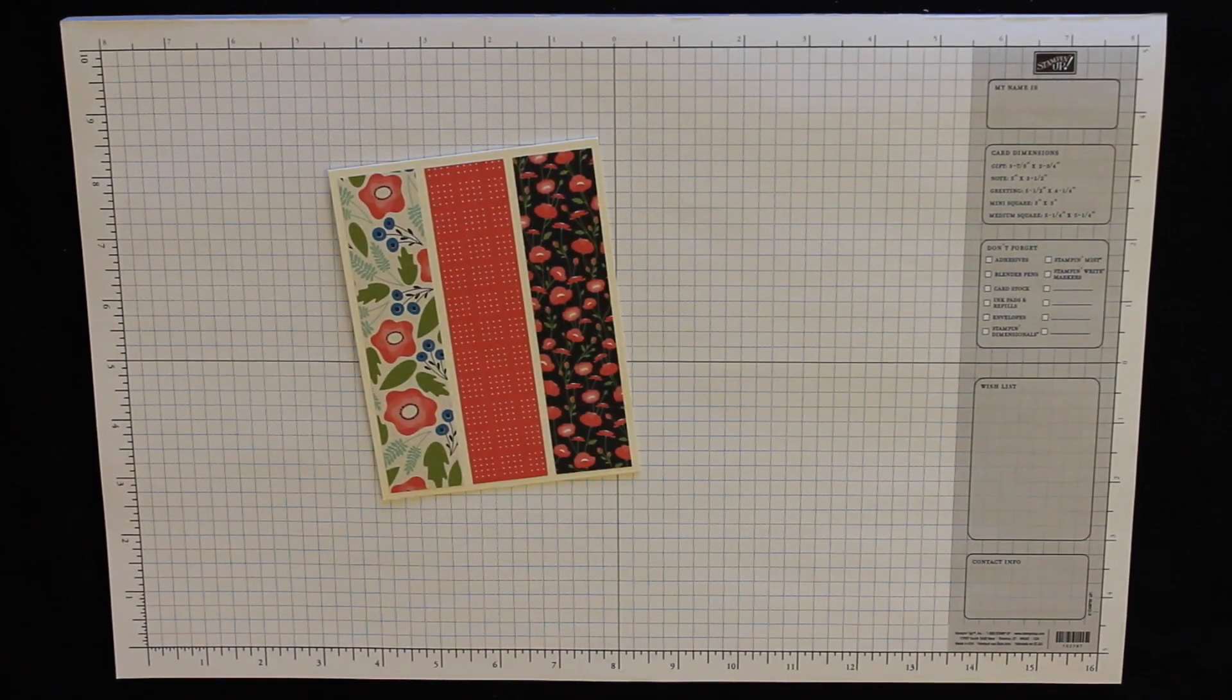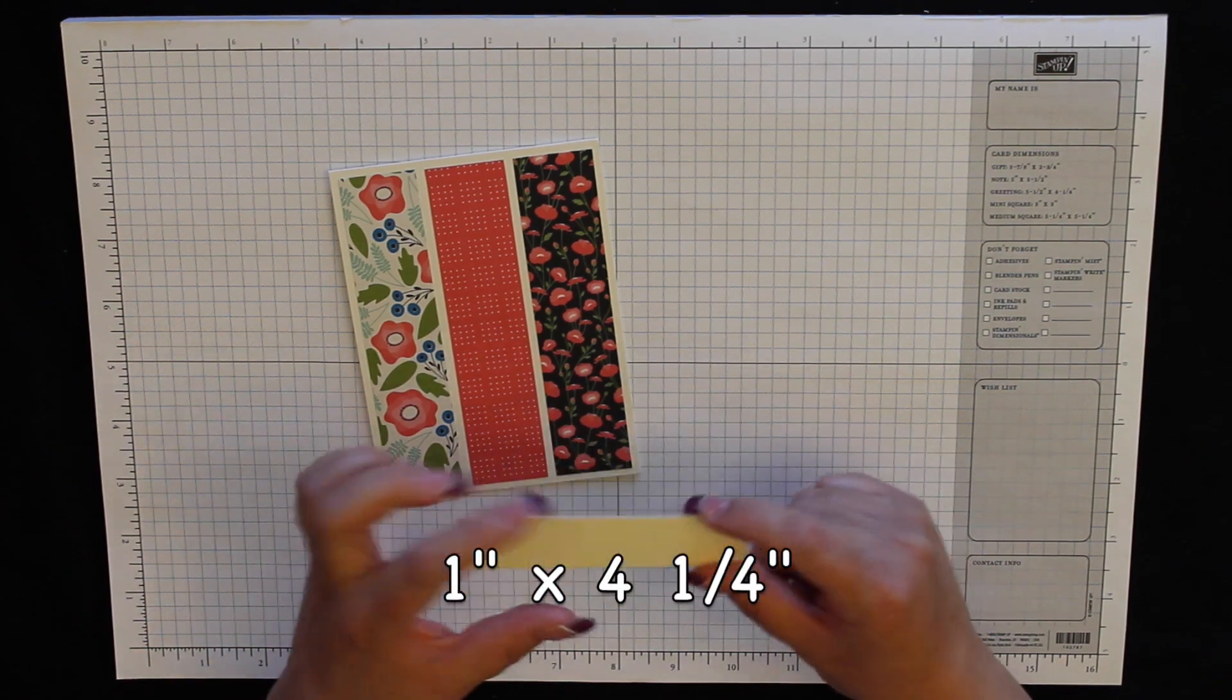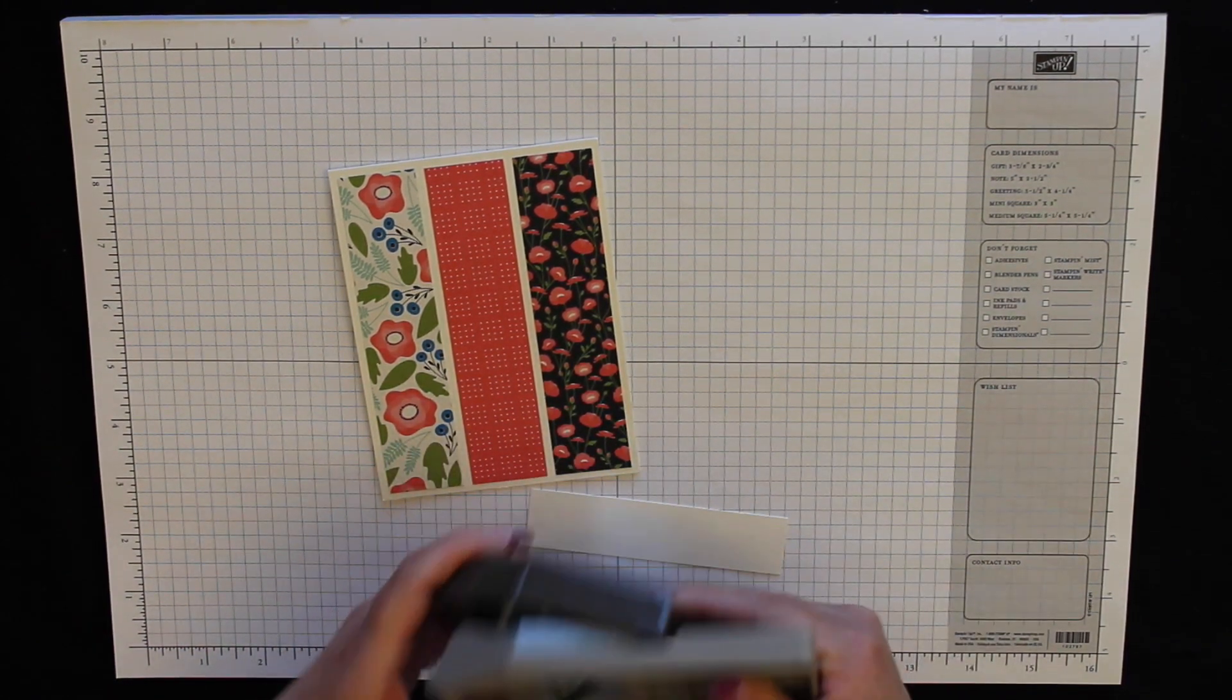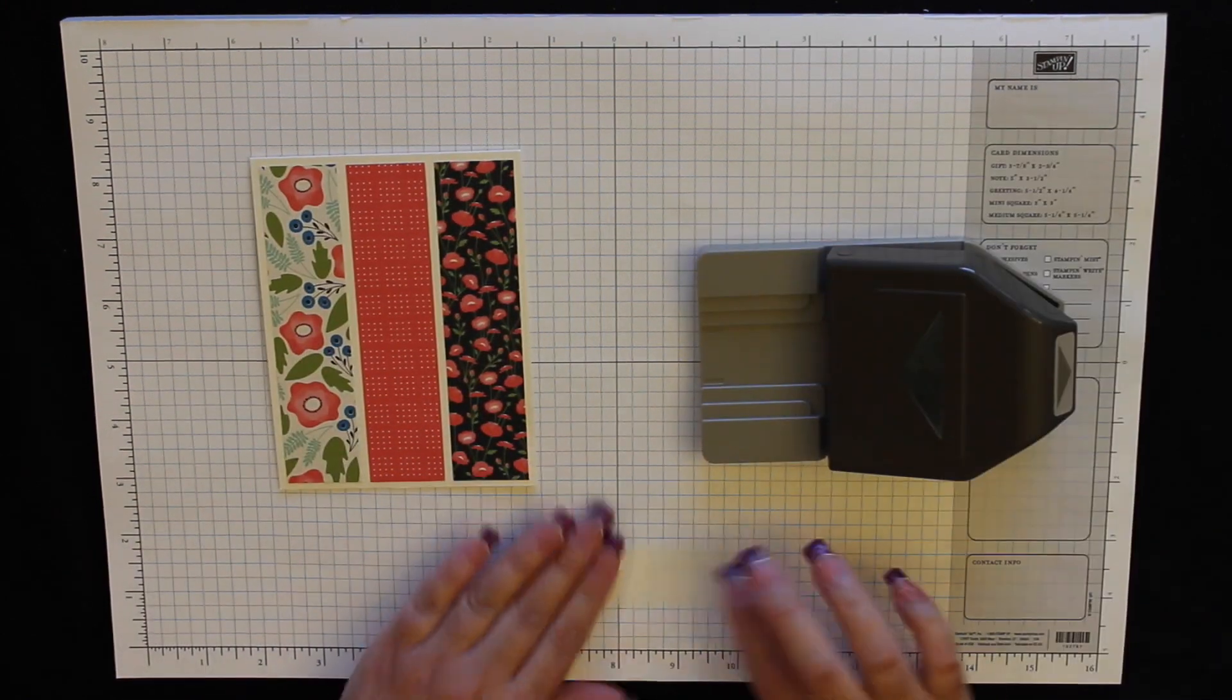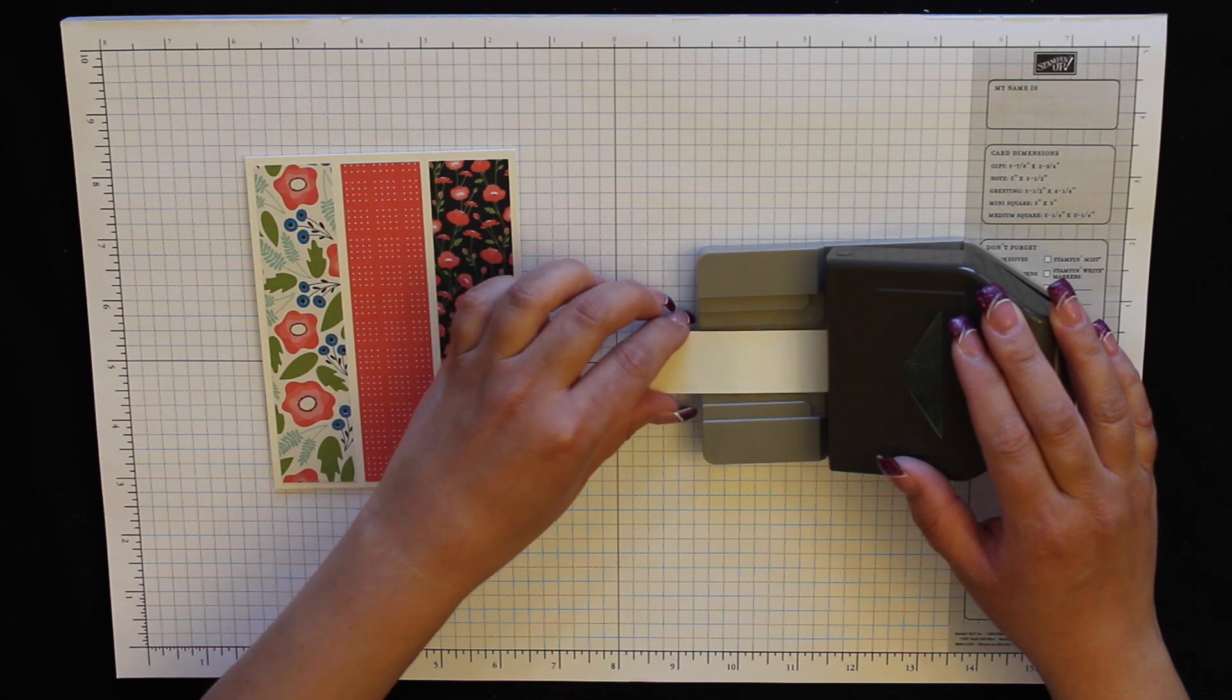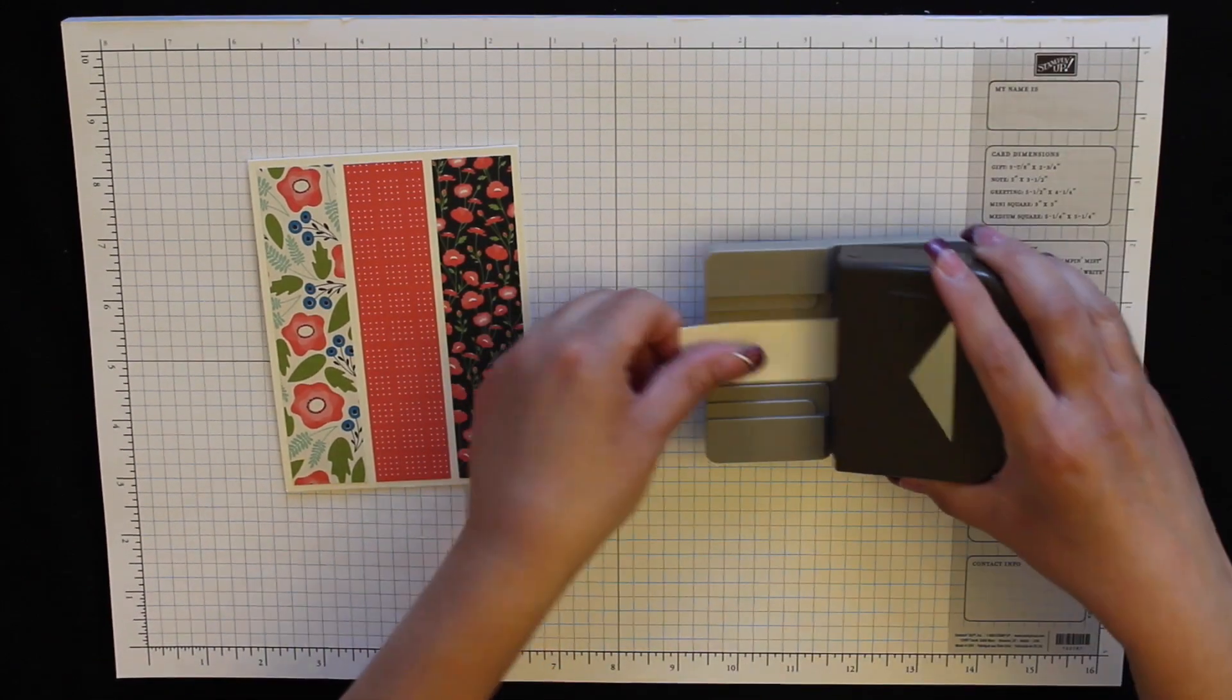Next you need a piece of very vanilla cardstock. This measures one inch by four and a quarter and also need the triple banner punch. Since this is one inch wide it should slide down right here in the middle on that bottom track. Make sure it goes all the way in and press.